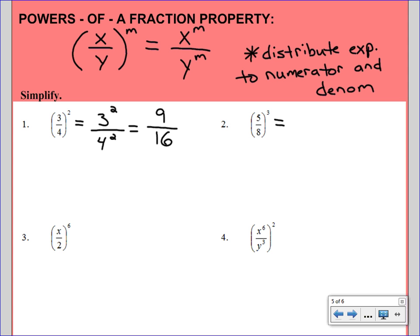Number 2 is the same way. Distribute that 3 to both the top and the bottom. And these we're not going to leave an exponent form. We are going to expand these out. So 5 to the third will give us 125. And 8 to the third will give us 512.